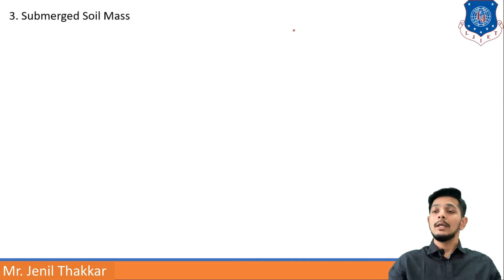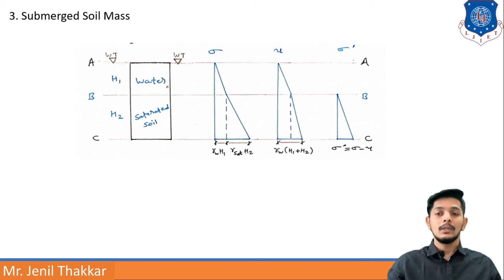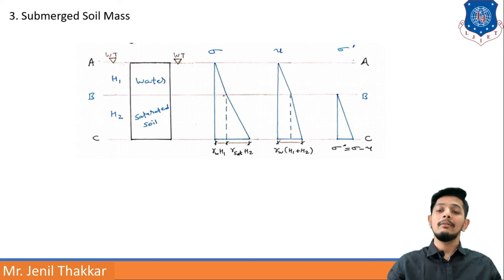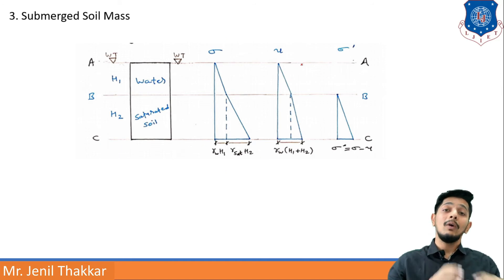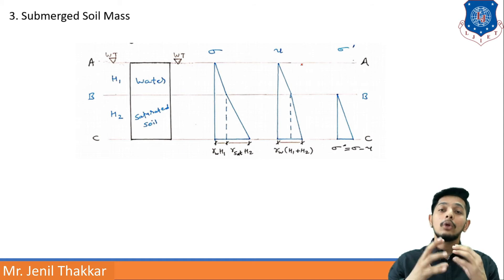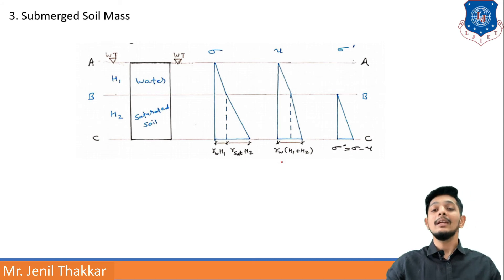Moving to the third case: submerged soil mass. In this case, water is above the soil ground line. You can see the water table inverted triangle at line AA. Both heights H1 and H2 will have water. For total stress at level BB: it is due to water over height H1, so gamma_W × H1. At level CC, saturated soil also acts, so total stress includes gamma_saturated × H2. For pore water pressure: water extends from line AA to CC throughout, so pores carry pressure. At level BB, pore water pressure = gamma_W × H1, and below that it is gamma_W × H2.